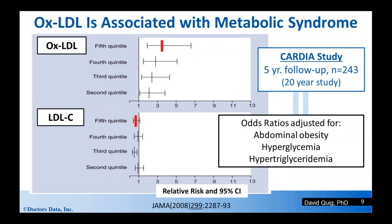Oxidized LDL is associated with increased risk for cardiovascular disease, and that's exacerbated when metabolic syndrome is present. Oxidized LDL also appears to be associated with metabolic syndrome itself. Comparing LDL to oxidized LDL and looking at relative risk for cardiovascular disease, for LDL there is basically no relationship across quintiles of increasing LDL cholesterol. Very differently, there is a more linear relationship with higher risk for metabolic syndrome as oxidized LDL increases. This data was derived from the CARDIA study, a five-year follow-up of over 200 adults.